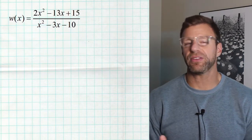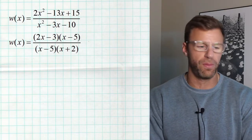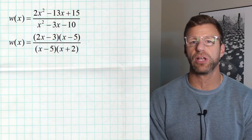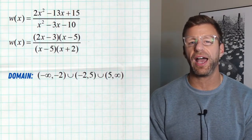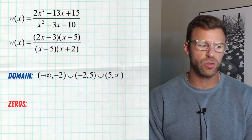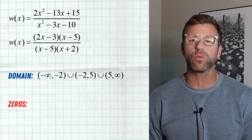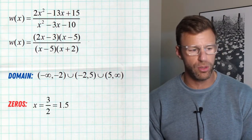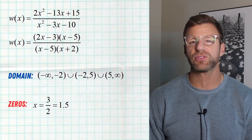In this next problem, factor first, then go straight to the denominator. What values must be excluded from the domain? We see five and negative two — both make the denominator zero, so they must be excluded. Our domain is negative infinity to negative two, negative two to five, and five to infinity. Looking at the numerator, the zeros are three halves and positive five. But positive five was already excluded from the domain, so we cannot list it as a zero. The only zero for this rational function is three halves, or 1.5.